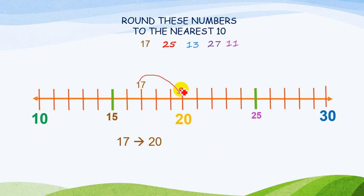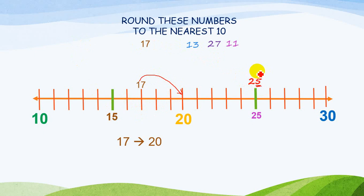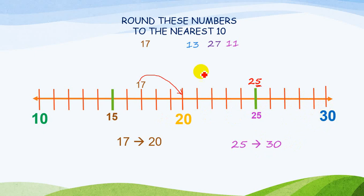The next number is 25. As we discussed earlier, if the number on the units place is 5, 6, 7, 8, or 9, it is going to be rounded up. So 25 is going to change to 30, because it is present between the two multiples 20 and 30. Round up means move to the bigger multiple.